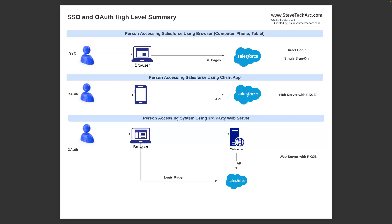So in these three scenarios, the interaction is initiated and controlled by a human — the human going directly to a browser, to their mobile device, or to a third-party website. It all begins with the human.